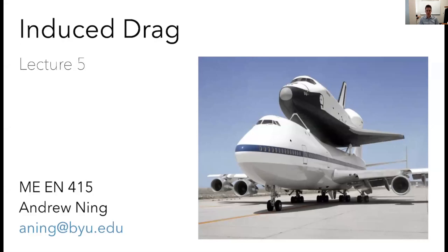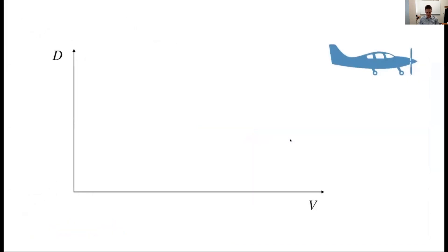Alright, so induced drag. I asked you, if you haven't done this, I'll ask you to do now, to predict: what does drag look like for an airplane as a function of velocity? So on the x-axis velocity, y-axis drag is the total drag of the airplane. What happens as I increase in speed going from 0 up to higher speeds? And if you haven't done it, pause, take a moment, try to predict that.